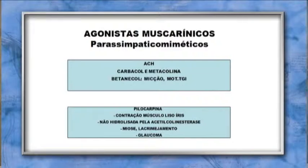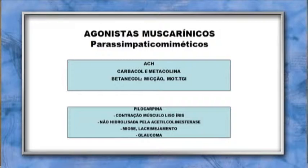As drogas que agem no sistema colinérgico podem imitar o que a acetilcolina faz. Quando ela age num receptor muscarínico, lembrando o efeito da muscarina, são chamadas agonistas muscarínicos ou parassimpático-miméticos — a própria acetilcolina (sem aplicação clínica), o carbacol e a metacolina. Somente o betanecol é citado clinicamente no uso para hipotonia do trato gastrointestinal e vesical, indicado para induzir micção e aumentar a motilidade gastrointestinal. A pilocarpina, como agonista muscarínico, é utilizada no glaucoma — induz contração do músculo liso, não é hidrolisada pela acetilcolinesterase, produz miose e lacrimejamento.